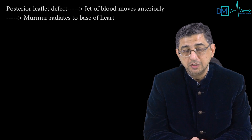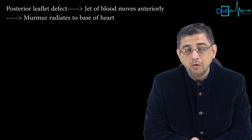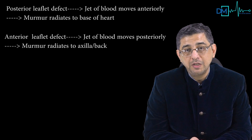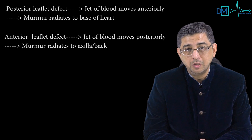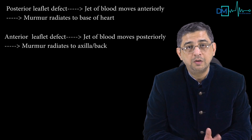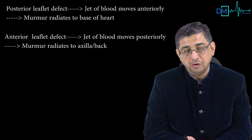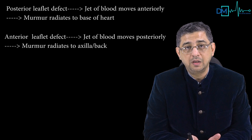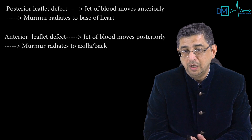Due to fluid dynamics: if the posterior leaflet is defective, the jet of blood moves anteriorly, so the murmur radiates to the base of the heart. If the anterior leaflet is defective, the jet moves posteriorly, so the murmur radiates toward the axilla or the back. Most importantly, remember that the posterior leaflet is more commonly involved than the anterior leaflet.